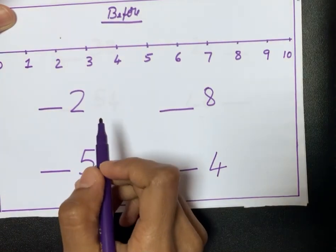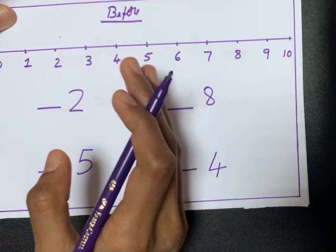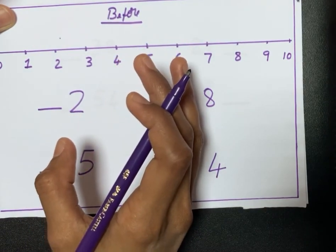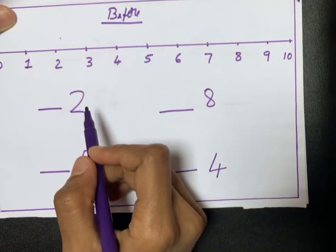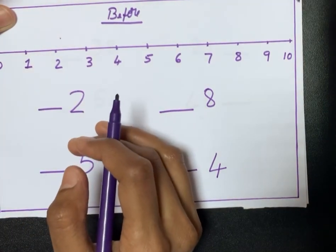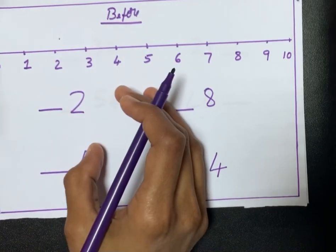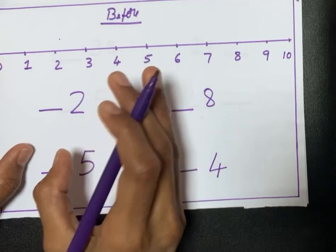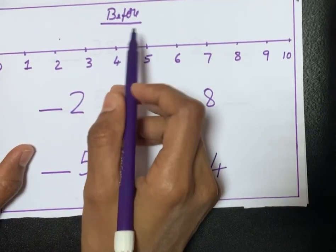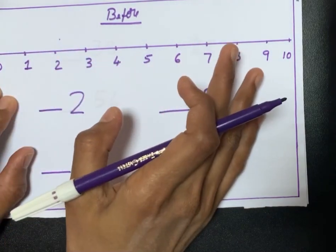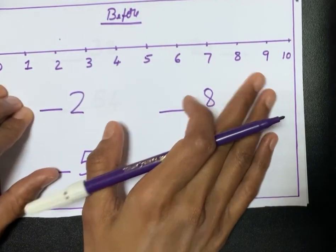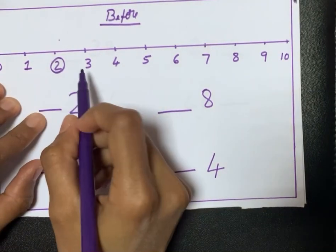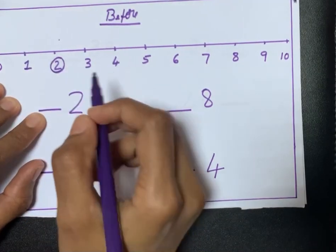Once your child is thorough with the after concept, you can teach them about before numbers. It depends on the child's ability — some children learn fast and some may take some time, so don't pressurize them. Once they are thorough with 'after,' teach before numbers. For before numbers, draw a scale and here the dash is on the left-hand side, meaning they have to jump one number to the left.